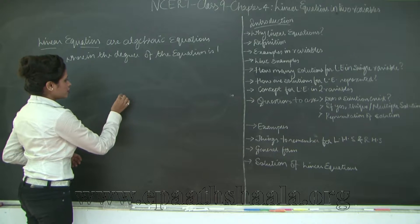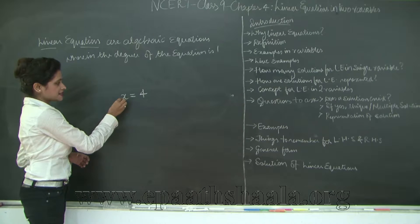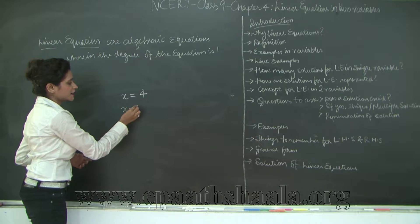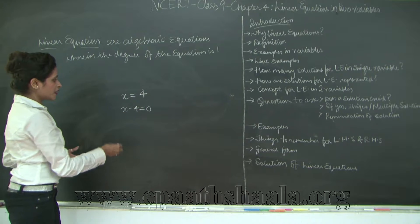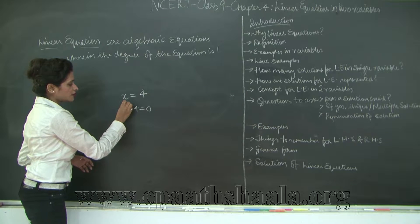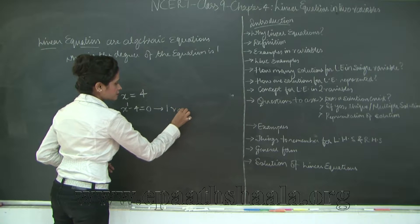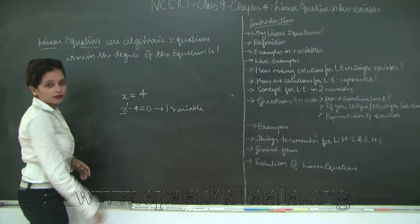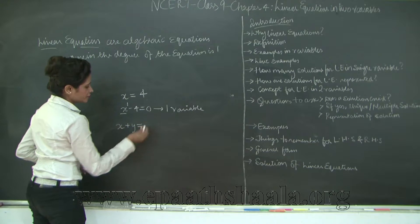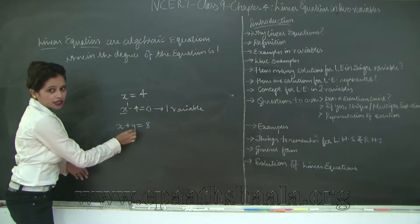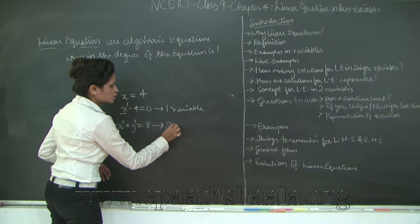This definition can be difficult to remember, so let me give you examples. If I have an equation x = 4, the highest power of x is 1. This can also be written as x − 4 = 0. This is a linear equation because you have an equal-to sign, and linear because the highest power of the variable is 1. This is an equation in 1 variable. Now another example: x + y = 8. Again you have 2 variables but the highest degree is 1 for each. Therefore this is a linear equation in 2 variables.